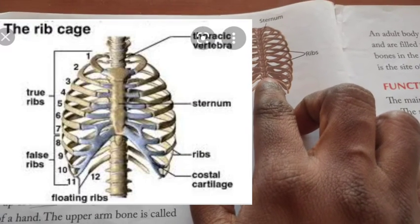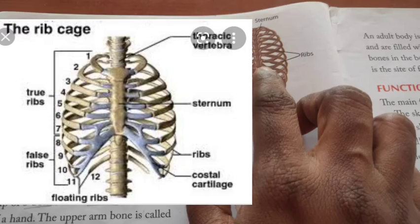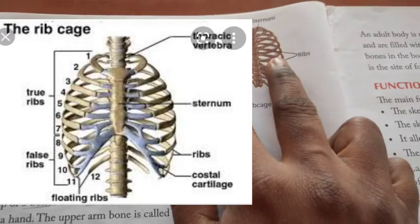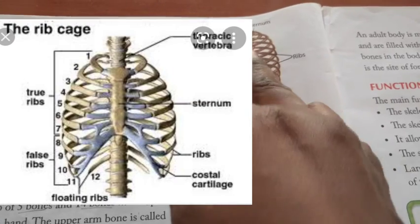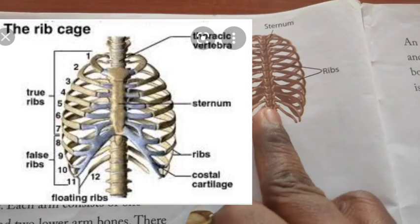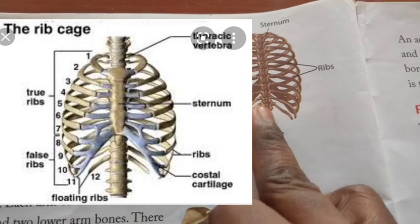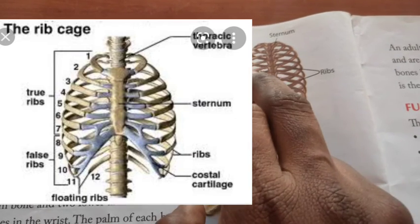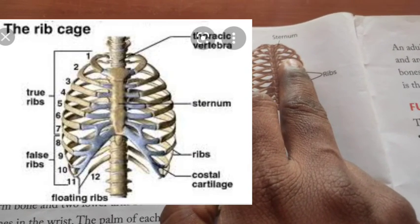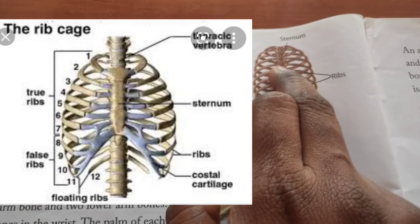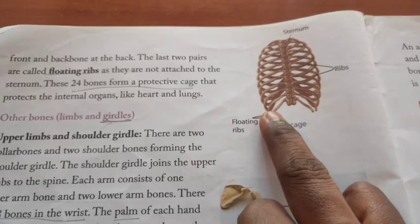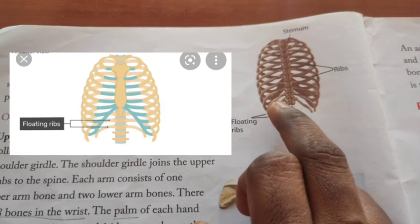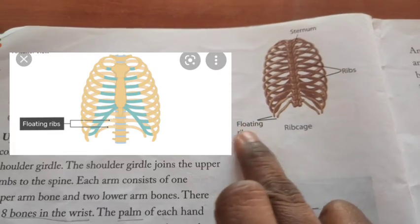In this rib cage there are 24 ribs in two sets of 12. The ribs are connected to the sternum, which is a long flat bone. The first 10 pairs of ribs are attached to the sternum at the front. The last two pairs are floating ribs, not attached to the sternum.